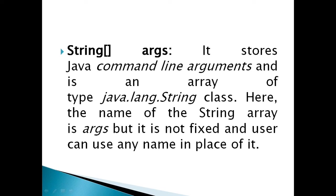The next term is String args. It stores Java command-line arguments as an array of type java.lang.String. Here the name of the string array is args, but it is not fixed — the user can use any name in place of it. It is simply an array of string arguments.